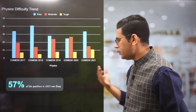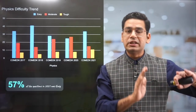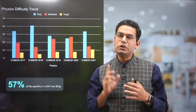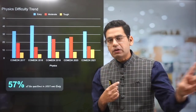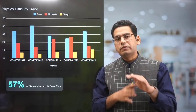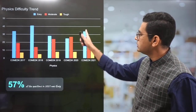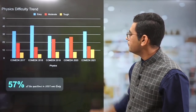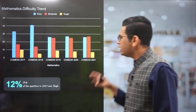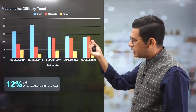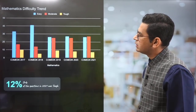In physics, 57% of the paper was in the easy category — that is where the game changes. Compared to other exams like JEE Mains, physics is generally very basic in nature. That is where you get the scoring opportunity, specifically in 2021, which was not the case earlier. In mathematics, only 12% of the questions were tough, so the math is not tough either. Moderate becomes a bit high, but not too high.